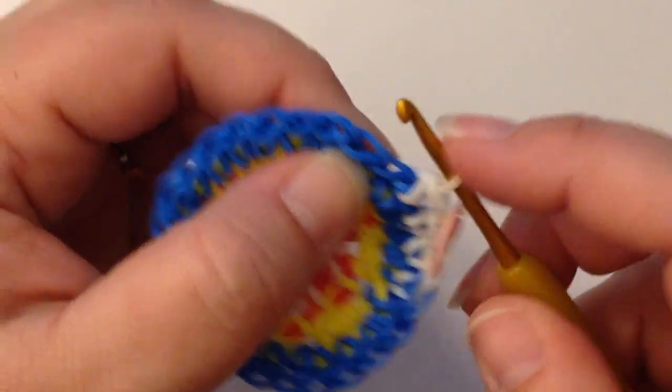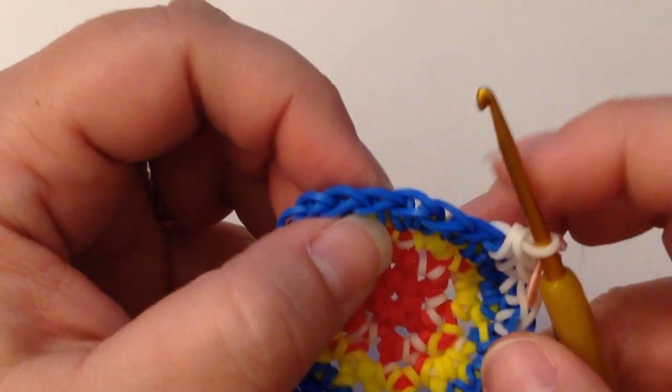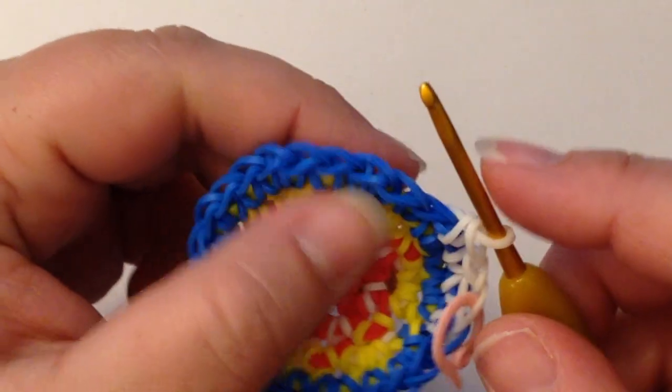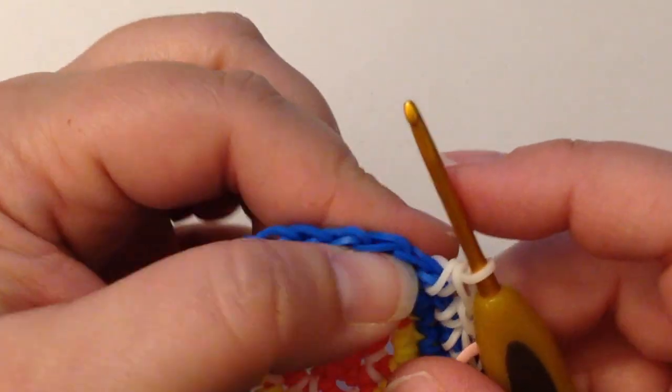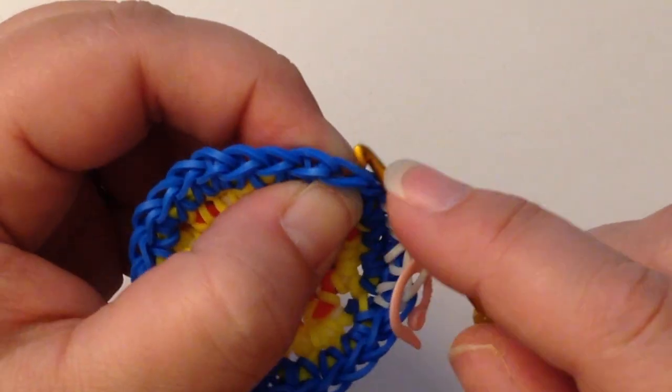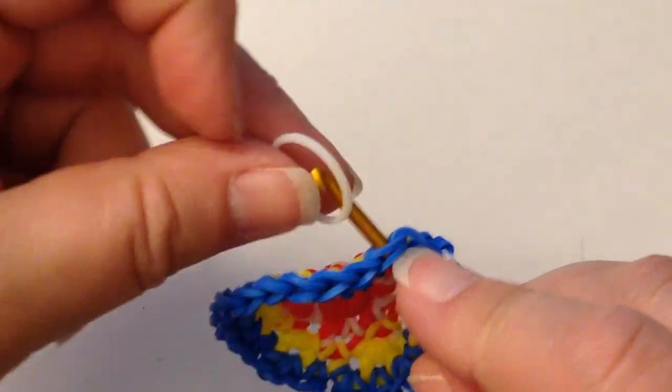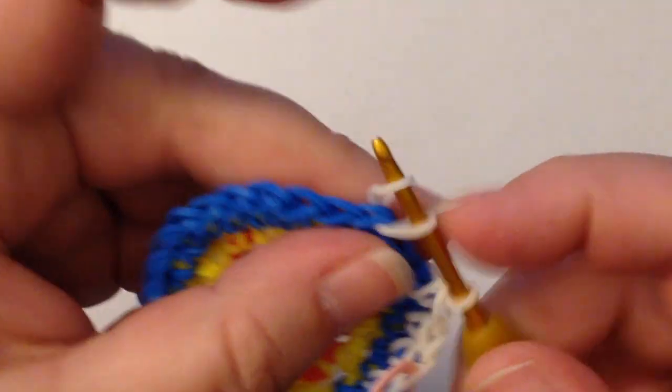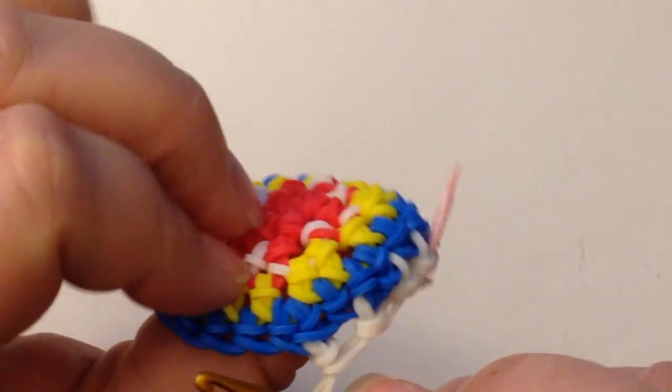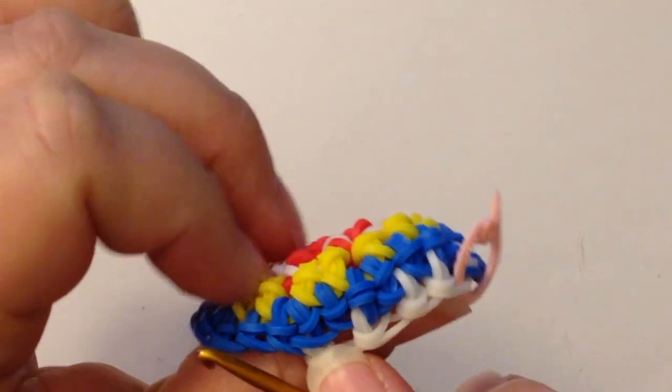Now the other way of doing it works I think nicer with crocheting with yarn rather than bands. I think this way is quite nice, but if you do it the other way you basically skip this stitch and you go to the next stitch and you do a single crochet.